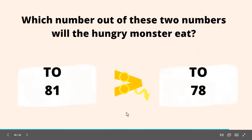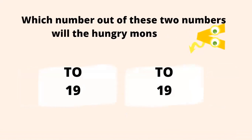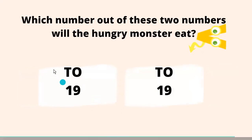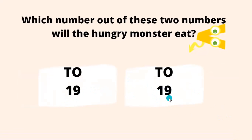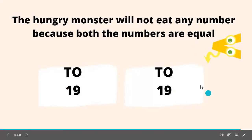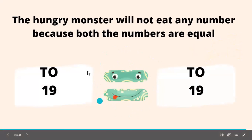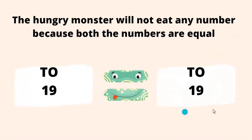One last question — which number is the hungry monster going to eat now? Let's check both numbers: 1, 9 and 1, 9 — that means both digits of these numbers are the same. So can you tell which number the hungry monster is going to eat? Perfect — the hungry monster will not eat any number because both numbers are equal. 19 is equal to 19. Superb!